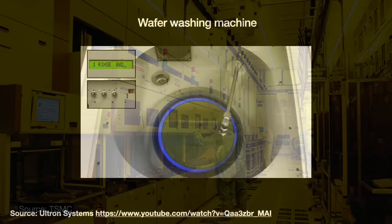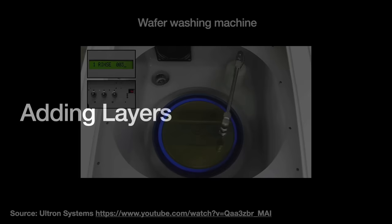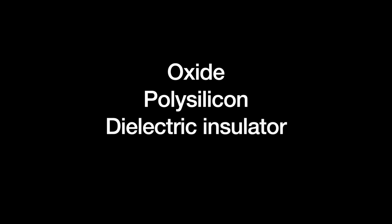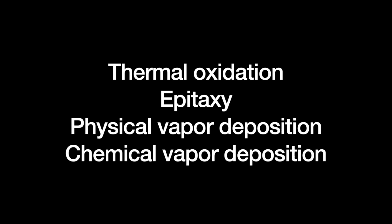Or cleaning — 30% of the steps in semiconductor processes are cleaning steps. Many different material layers go into a semiconductor. Those layers can be made from either an oxide, polysilicon, a dielectric insulator, or a metal conductor. The fundamental challenge is how to vaporize the substance atoms, transport them to the substrate, and then evenly condense them onto the surface. The industry uses four methods to create a thin layer: thermal oxidation, epitaxy, physical vapor deposition, and chemical vapor deposition.